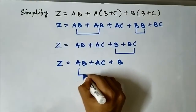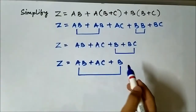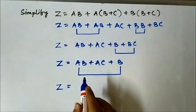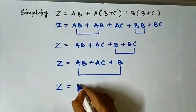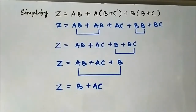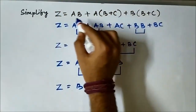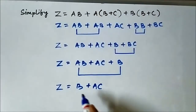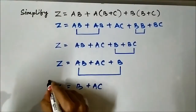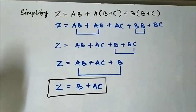Now again, these two terms ab and b — we can apply the same absorption rule: b plus ba equals b. So ab plus b simplifies to b. The final simplified expression is z equals b plus ac. We have reduced this Boolean expression into this simpler form: b plus ac. This is our final expression.